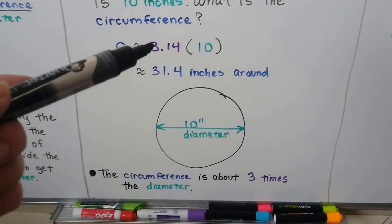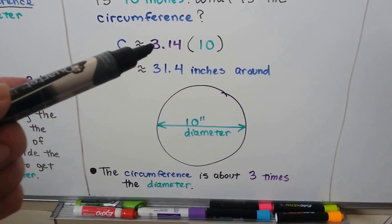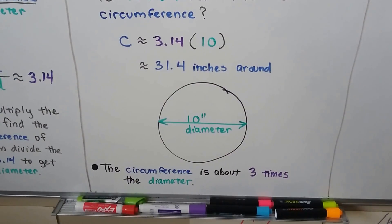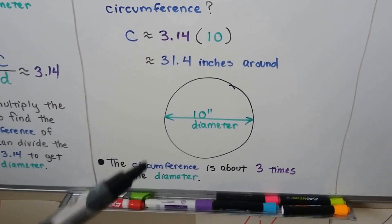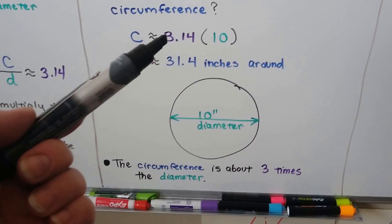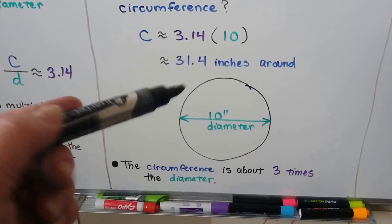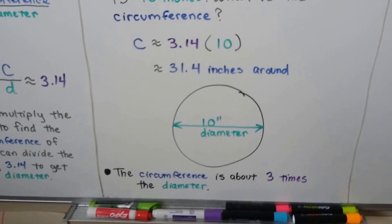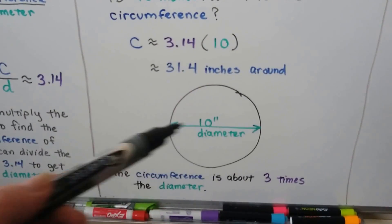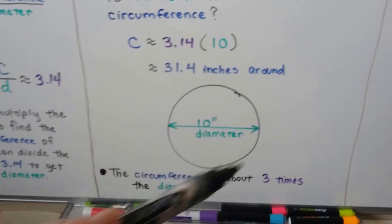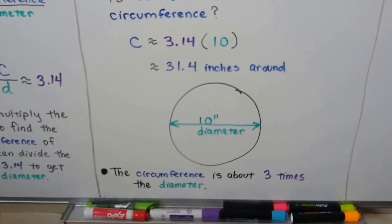Now, because 3.14 is really close to 3, we can actually estimate a circumference. Because it's about 3 times the diameter. 3.14 is very close to 3, isn't it? Like 3.1 is close to 3. So if you just want to get a rough estimate of a circumference, you could find the diameter and say, oh, it's about 10 times 3 is 30. You'd be close.